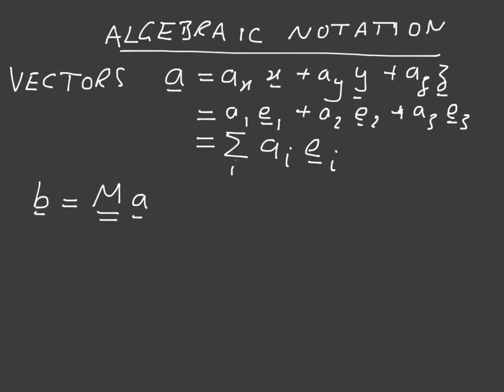And in terms of components, we would write B subscript I is equal to M. I just made a mistake there. We need to put a sum in there. That's equal to the sum over, let's say J, of MIJ AJ.